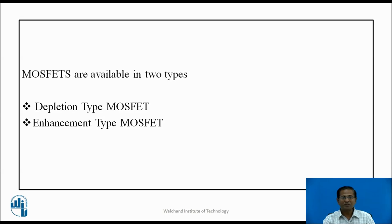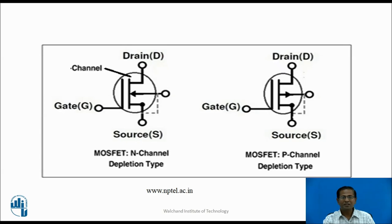MOSFETs are available in two types: depletion type MOSFET and enhancement type MOSFET. Further, depletion type MOSFETs are divided into two types: N-channel D MOSFET and P-channel D MOSFET. These are the schematic symbols of the MOSFETs with three terminals — source, gate, and drain — and a fourth terminal, substrate. The arrow represents the direction of majority charge carriers from source to drain, whereas in P-channel MOSFETs the arrow is outward, from drain to source.